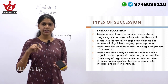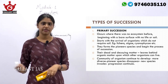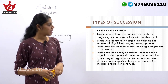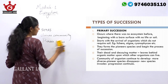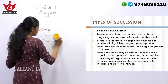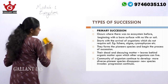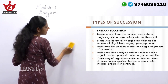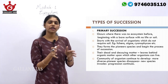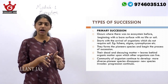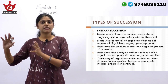Succession has been classified into two types: primary succession and secondary succession. Regarding primary succession, it occurs on a surface or in an area where there was no ecosystem previously.